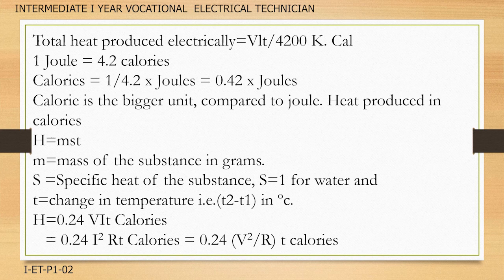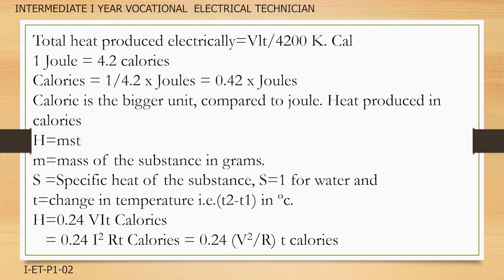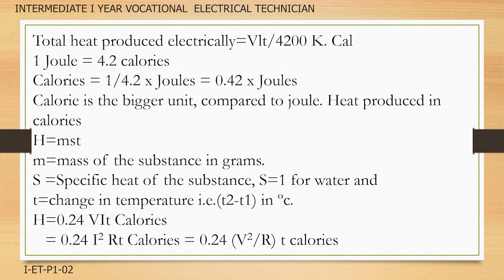Heat produced in calories: H = M × S × T, where M is the mass of the substance in grams, S is the specific heat (S = 1 for water), and T is the change in temperature T2 − T1 in degrees centigrade. Therefore H = 0.24 × V × I × T calories = 0.24 × I²RT calories = 0.24 × (V²/R) × T calories. Thank you.